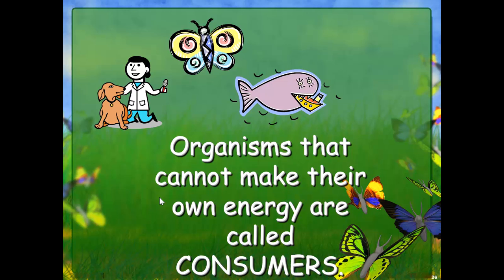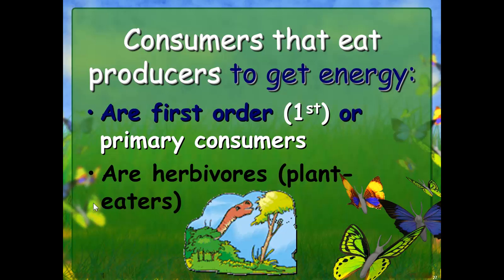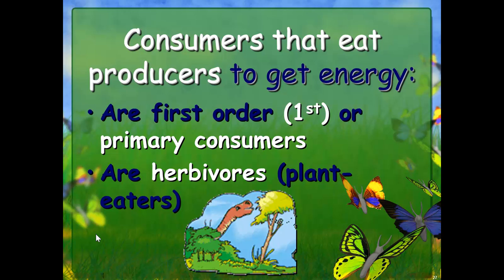Organisms that cannot make their own energy are called consumers because they have to consume or eat other things to get their energy. Consumers that eat producers to get their energy — things that only eat plants — are called first order or primary consumers. They're also called herbivores, meaning plant eaters. That is the technical term for what we might have called plant eaters when learning about dinosaurs.